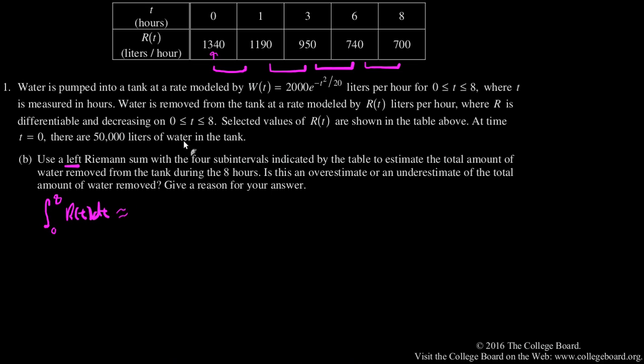And it'll be approximately equal to, the first rectangle is one times 1,340, plus the second rectangle is two units wide, going from one to three, and the height from the left side of that interval is 1,190.